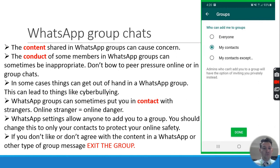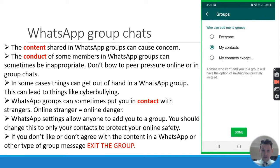If a young person doesn't feel comfortable with what's happening in a WhatsApp group — whether because of things being shared, things being said, the people in that group, or a mixture — then they need to take it upon themselves to leave that group, distance themselves, and exit the group in order to protect their own online safety.